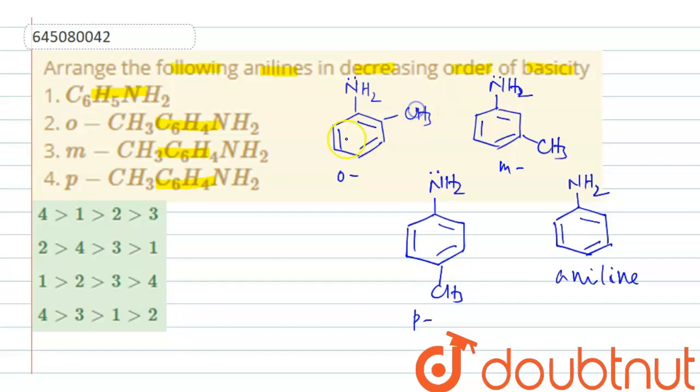But here what is happening, methyl group, let us see, we know methyl is plus I and plus H hyperconjugation. Here it is plus I group, plus I group means here electron repelling group and it also gives electrons through hyperconjugation to the ring. Therefore, what will happen, we will expect orthotoluidine will be the most basic.